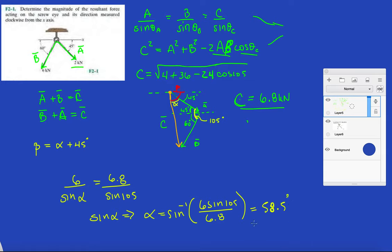Alright and so we just gotta add the 58.5 plus 45. So now the angle that it makes with the x-axis will be 58.5 plus 45 degrees and that'll give you roughly 103.5. And now you have the magnitude of C and the direction of C.